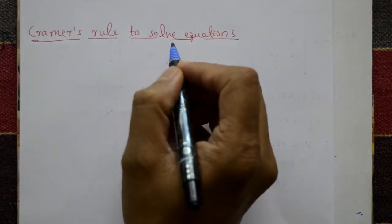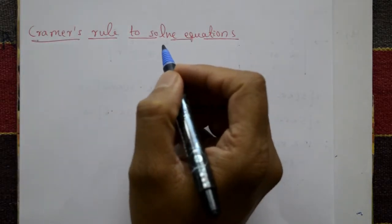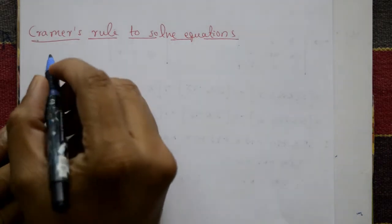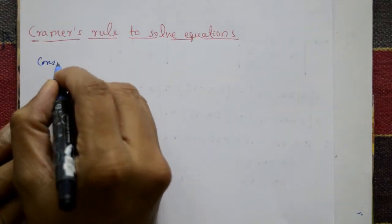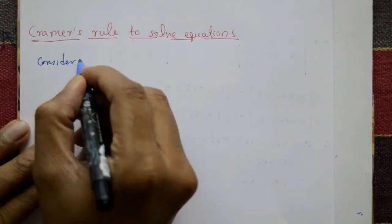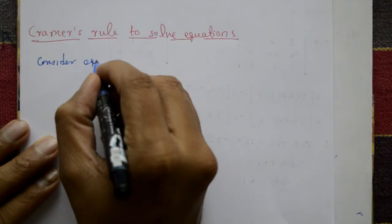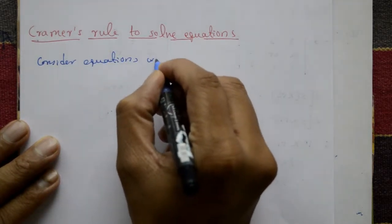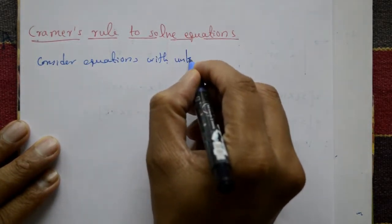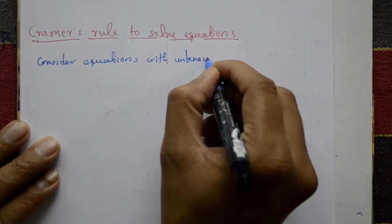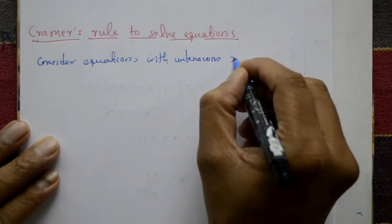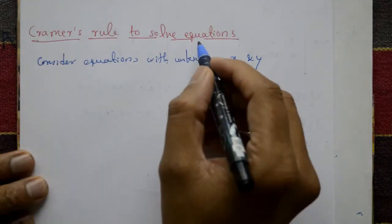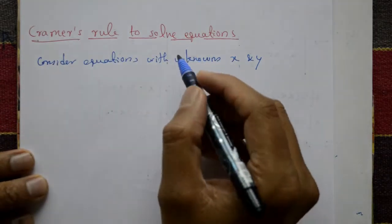We will use Cramer's rule to solve the equations. Now consider equations with two unknown variables x and y. Let us see how Cramer's rule works.